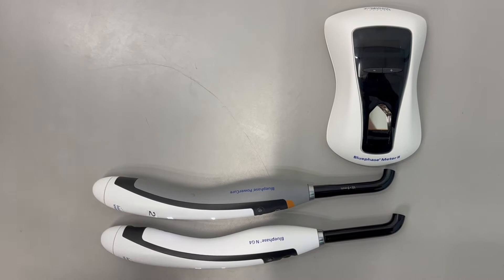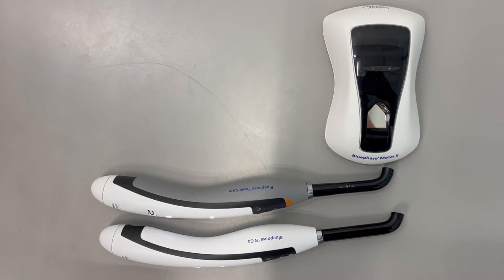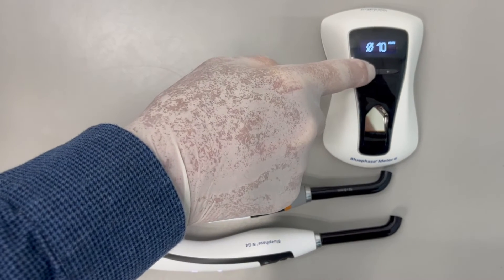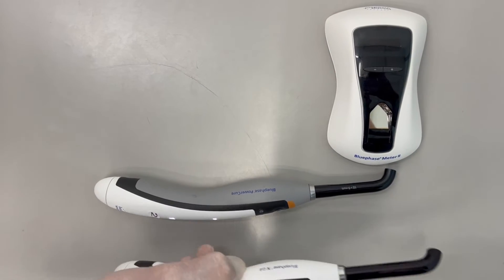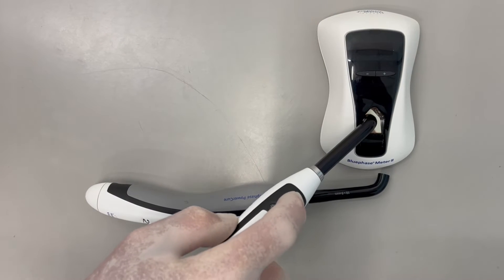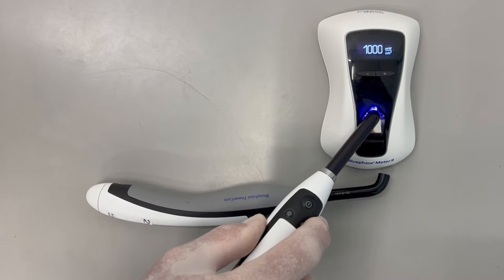When we pick up the other curing light, the NG4, we change the tip diameter to 10mm and place it on the Blufase Meter 2. The irradiance is again 1000 milliwatts per centimeter squared.